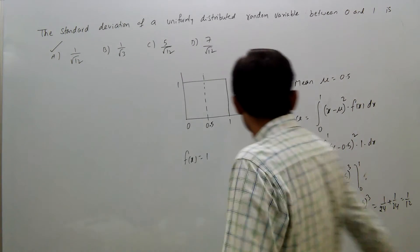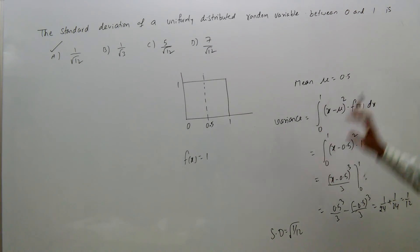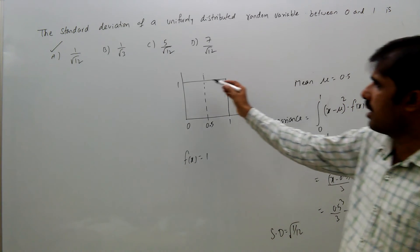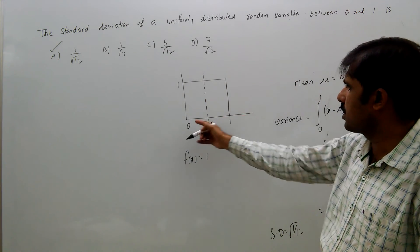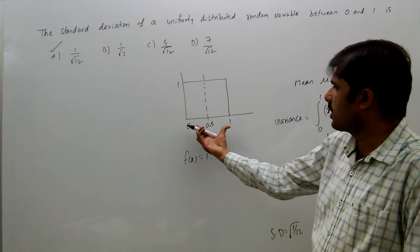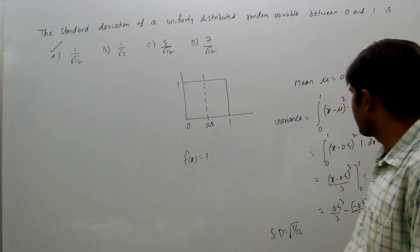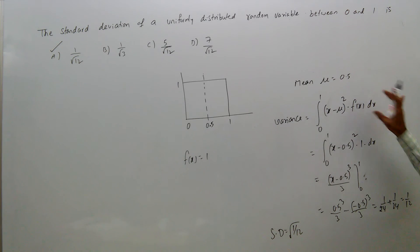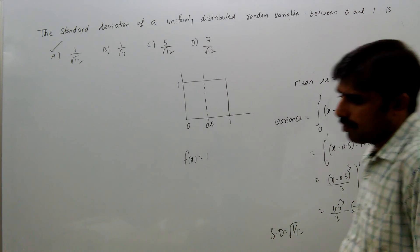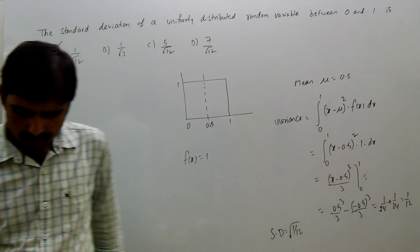This is the formula for variance. f(x) is given as constant height 1 because it is varying from 0 to 1, width is 1, which means height is also 1. We can understand this by seeing the figure itself. So variance is 1/12, and standard deviation is 1/√12. Thank you.